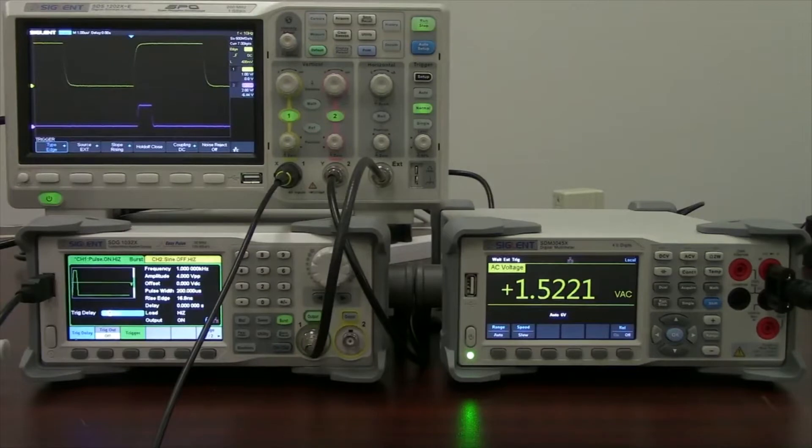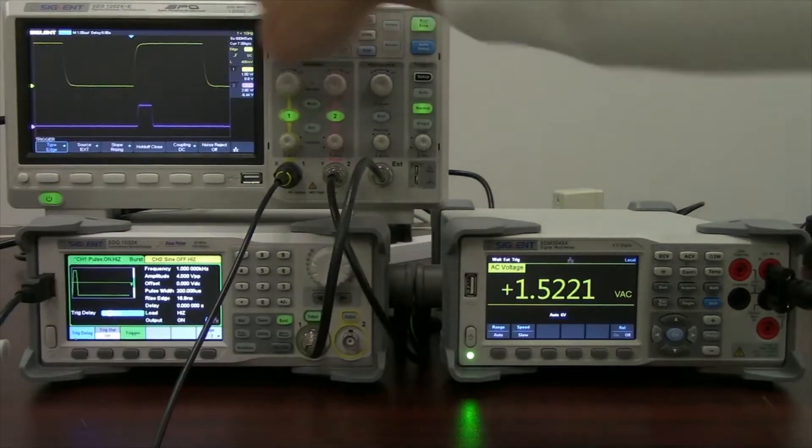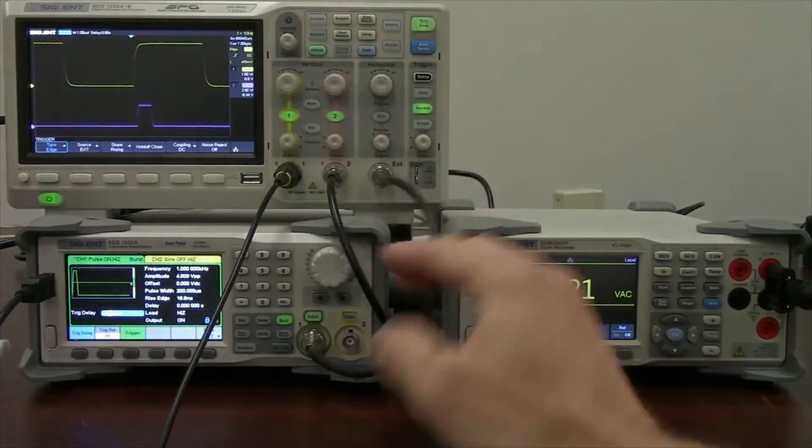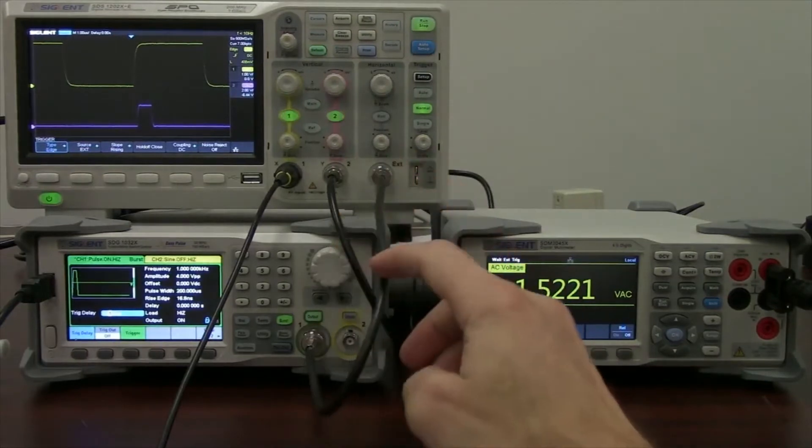In this particular example I'm going to use the Siglent SDS 1202X-E oscilloscope. That is a two channel oscilloscope with an external trigger input.